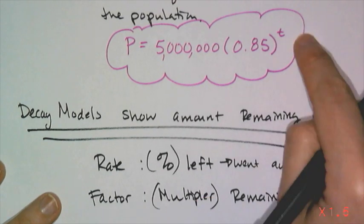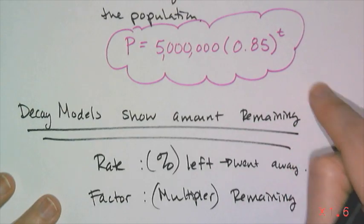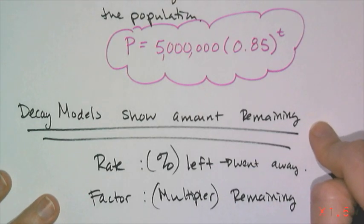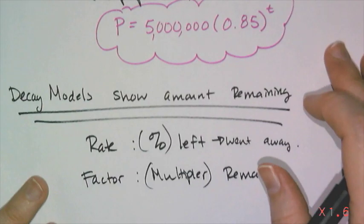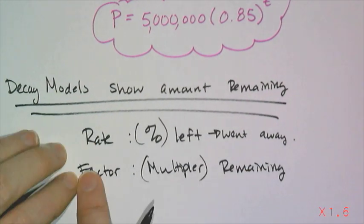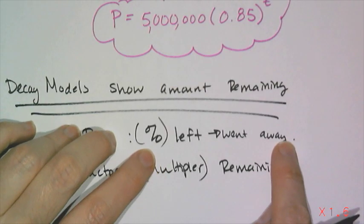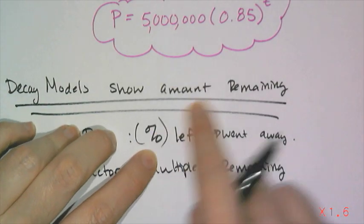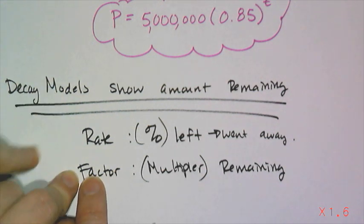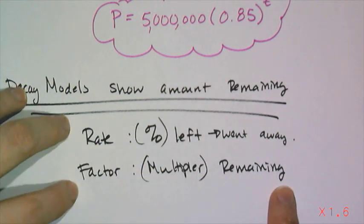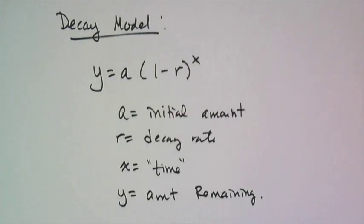Now decay models like this one always show you the amount remaining. Because if you're a city planner, you don't care about the people who left. You care about the people who are still in your city who you have to take care of. Whenever you're given the situation, you're given a rate, which is always a percent who went away. That's not the percent who are left over, but the percent who left. Now the factor that you need for your equation, the multiplier, will show the amount remaining. This is the decay model that we're going to be using.